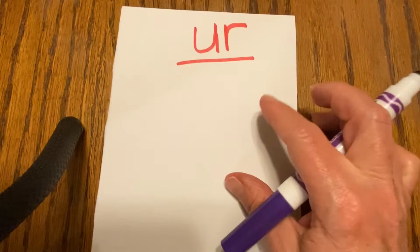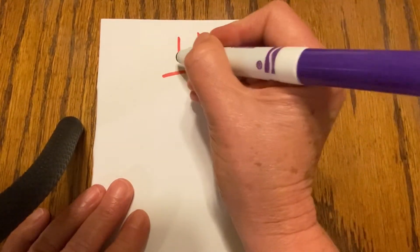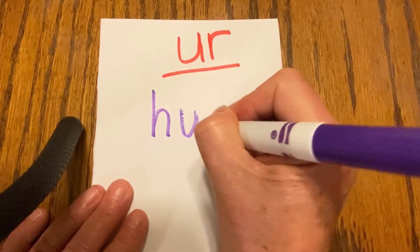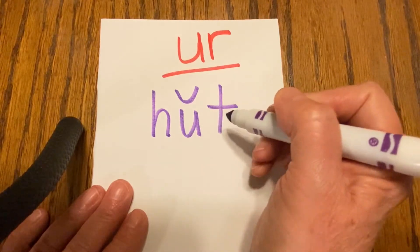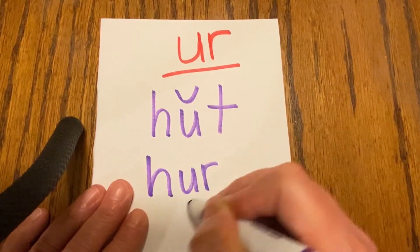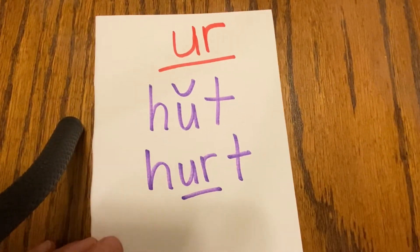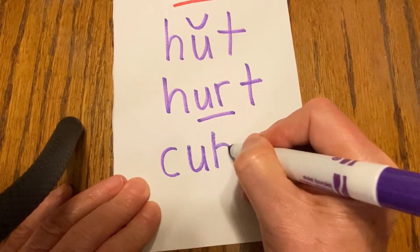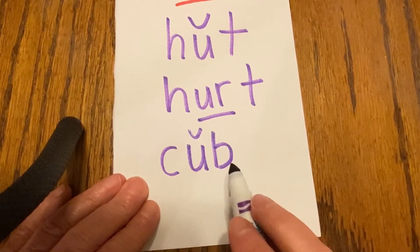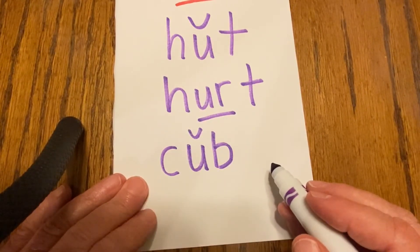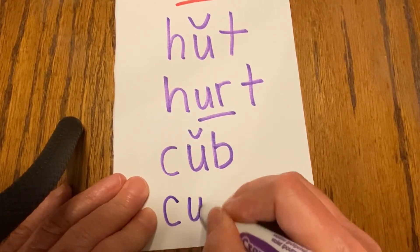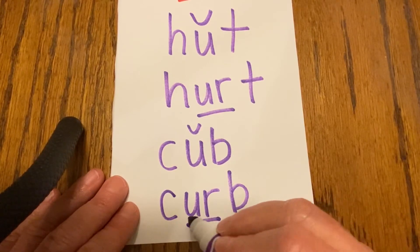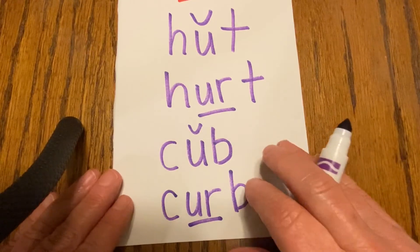All right, the last of the triplets is the U-R. This goes 'er' just like the E-R and I-R. Let's squeeze an R in there — what's the word? Hurt. How about C-U-B — cub, like a little bear cub. All right, let's squeeze the R in there — C-U-R-B. Curb.